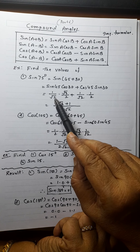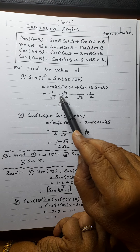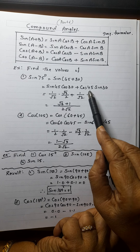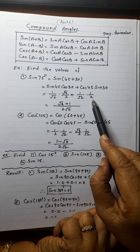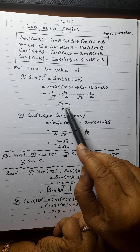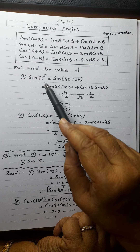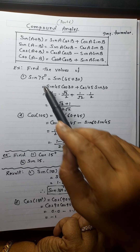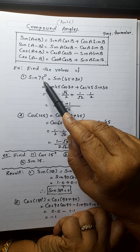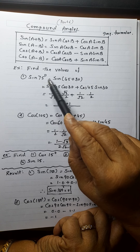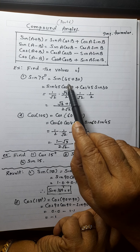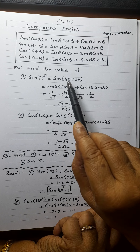Sin 45° is 1/√2, cos 30° is √3/2, cos 45° is 1/√2, and sin 30° is 1/2. Taking LCM 2√2, it becomes (√3+1)/(2√2). So no need to remember the value directly — you should know how to derive it. Don't write angles like 70+5; only use angles whose trigonometrical ratios you know.